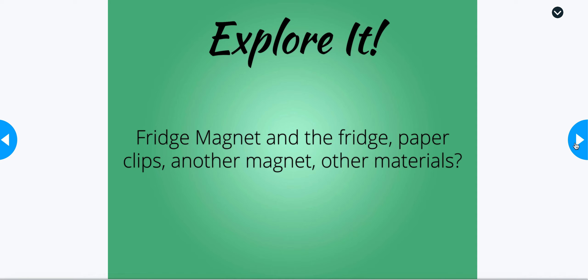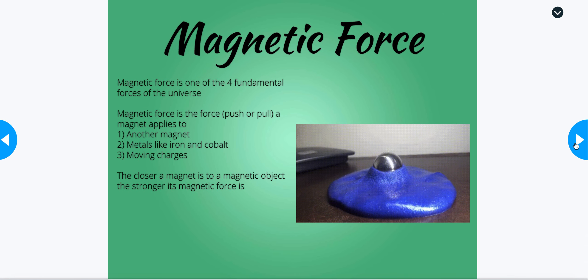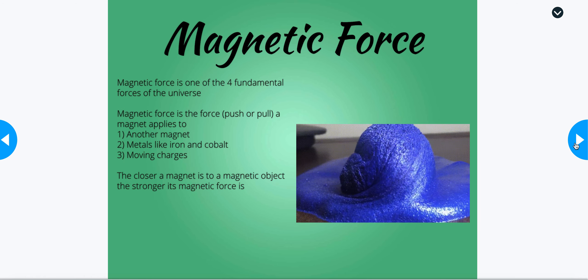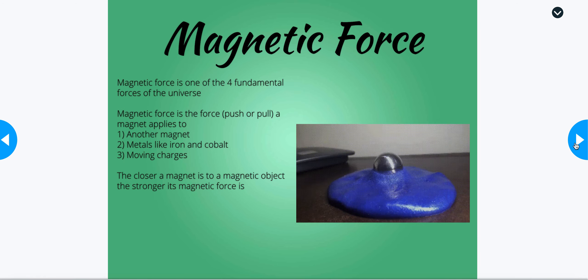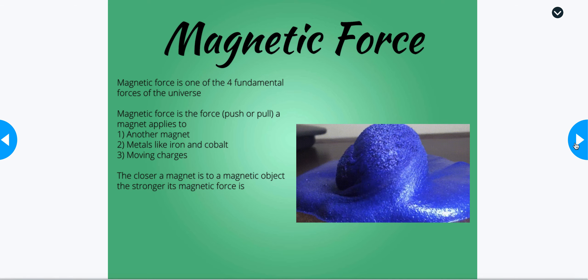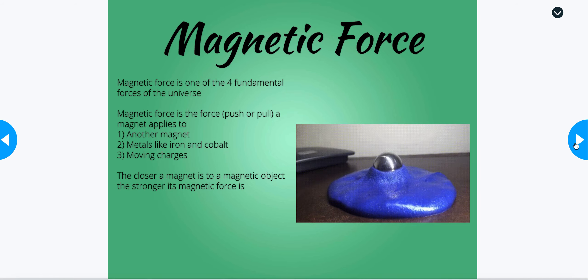What I'd like you to do today, if you have the ability to, is pause the video and go find a magnet on your fridge or around the house, and try it out with a couple of things. Try it with the fridge and see what happens when the magnet gets close to the refrigerator door. Try your magnet with some paper clips and see how they respond. If you can find another magnet, try placing the two magnets next to each other in different positions. Maybe try some other materials as well and see how the magnet interacts with them.